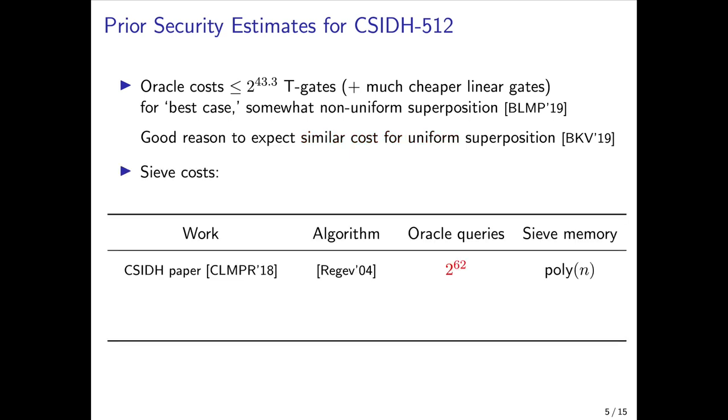Regarding the sieve, the second main component of the hidden shift algorithm, the original CSIDH paper used the low space algorithm of Regev to estimate that it would take about 2^62 oracle queries to break CSIDH. Subsequently, Bonnetain and Schrottenloher used Kuperberg's original large space algorithm to estimate that CSIDH-512 could be broken with about 2^32 oracle queries using 2^31 quantum bits of memory. But with regard to Kuperberg's follow-up algorithm, there had been no prior work estimating the security of CSIDH against that algorithm.